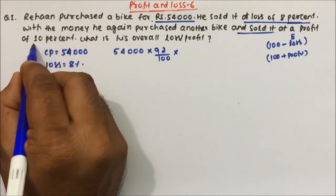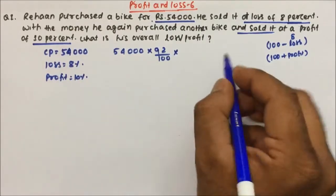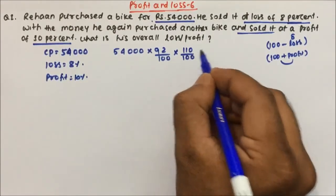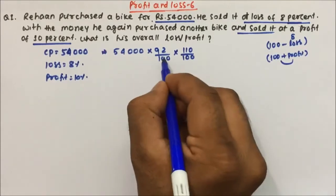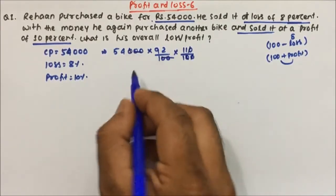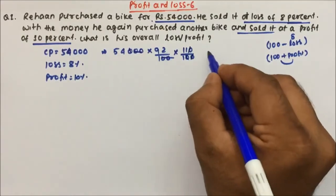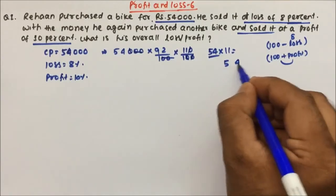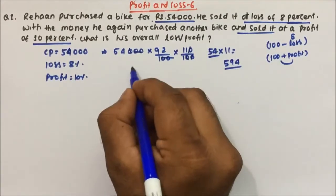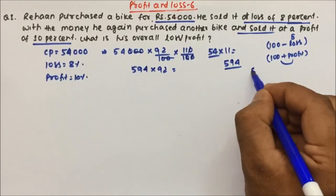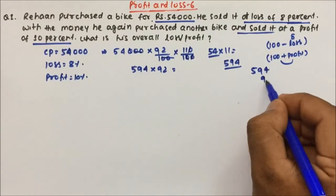And then again he is selling that at 10% profit. So if it is a profit means 100 plus 10, that's 110 by 100. Now this 2,0 will take 2,0 of 10, 10 cancel, 10 cancel. Now 54 into 11. So if we multiply 54 into 11, we have to write down same thing 5,4 and 5 plus 4 is 9. So it will be 594.